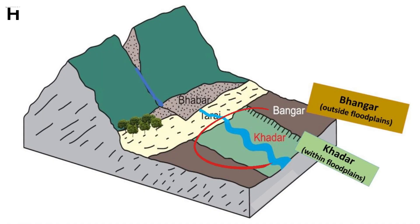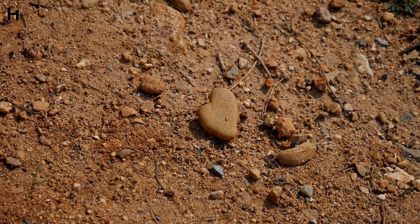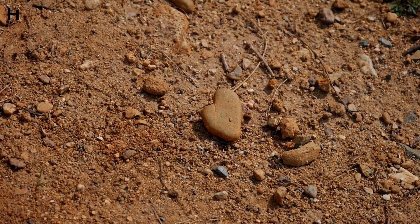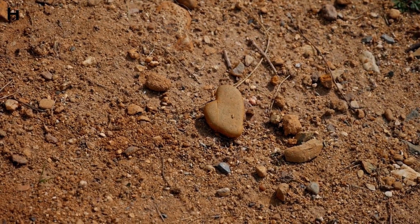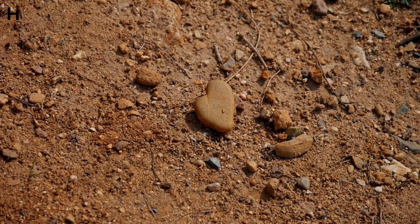The new alluvium called Khadar is found along river banks. The soil is often renewed due to frequent flooding. It is fertile and intensive agriculture is practiced here.